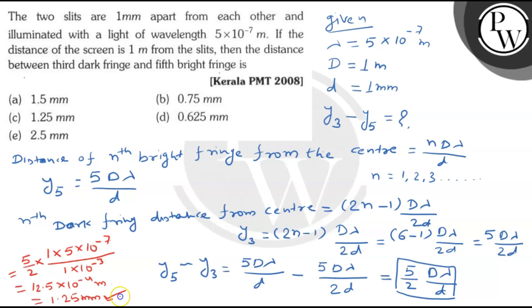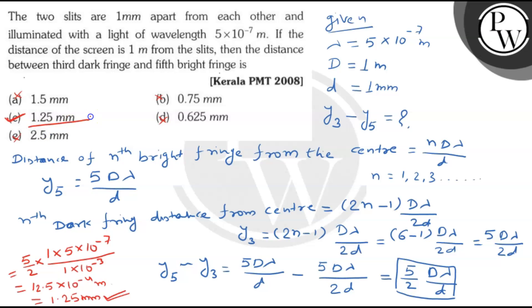So the answer is 1.25 mm, which is option C. The other options are wrong. C is the correct answer. I hope you understood it well — best of luck!